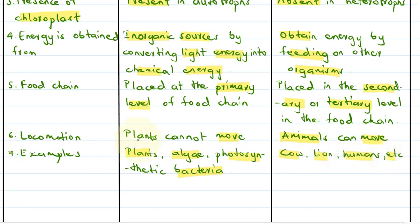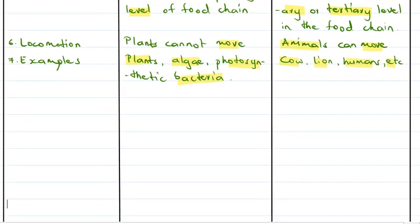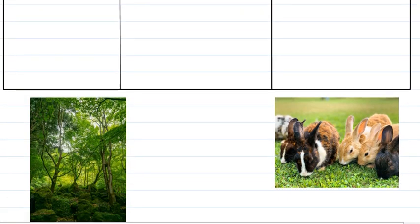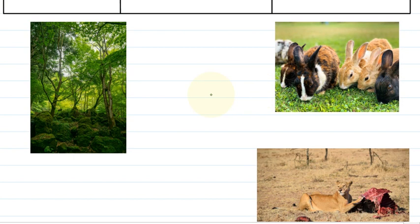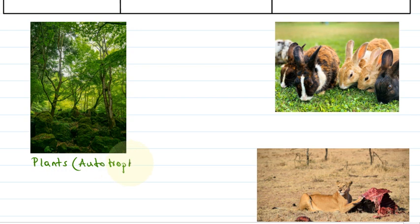Now I am going to show you a few pictures. Now that we have studied about autotrophs and heterotrophs, you will be telling me whether these are autotrophs or heterotrophs. The first picture we can see here is plants. And we had studied that plants are autotrophs — they prepare their own food by the process of photosynthesis. So the first picture is of plants and they are autotrophs.